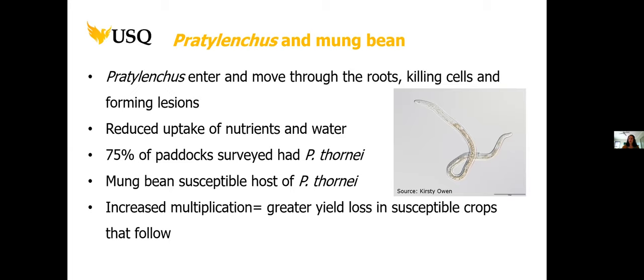This results in plants with very poor vigor — they look quite wilted and you can get nutrient deficiencies. In our region, surveys found that 75% of paddocks had Pradylenchus thornei in the soils, so it's quite a ubiquitous problem. Mungbean is a susceptible host; it can result in yield losses and increase multiplication of the plant parasite in the roots, which has a knock-on effect to any subsequent crop.